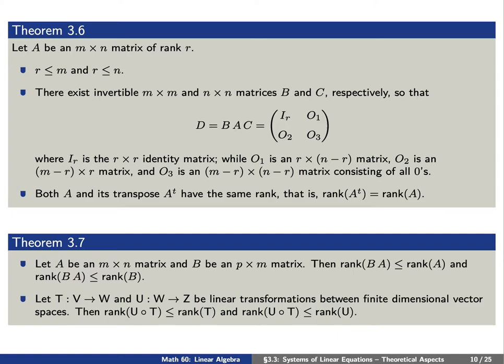Something similar can be said if we have two linear transformations T and U. If T and U are defined such that the composition U circle T makes sense, then the rank of the composition is less than or equal to the rank of T and less than or equal to the rank of U.